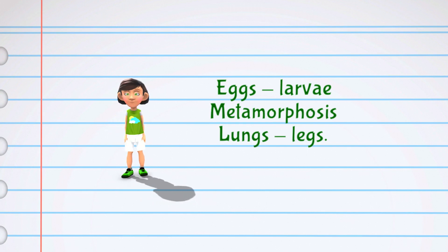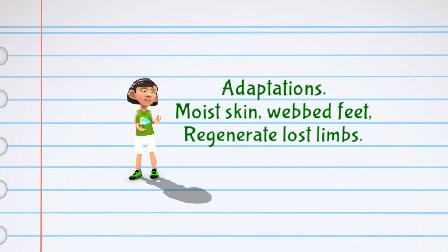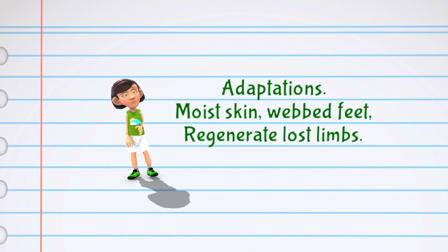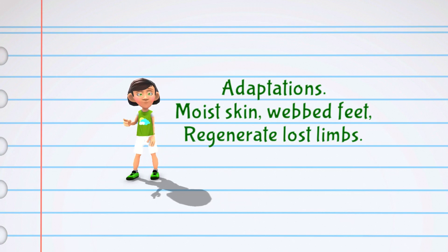Amphibians have many adaptations that help them survive in both water and on land. For example, they have moist skin that allows them to absorb oxygen through their skin when in water and also helps them breathe on land. They also have webbed feet for swimming, and some species can even regenerate or regrow lost limbs.